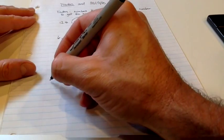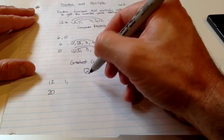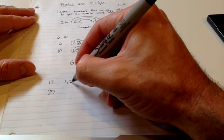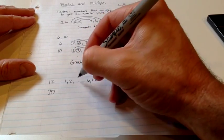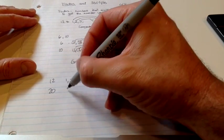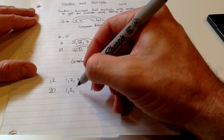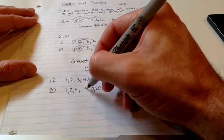So if I'm looking for common factors of numbers like 12 and 20, I start out, what are my factors? 1, 12, 2, 6, 3, and 4. For 20, 1, 20, 2, 10, 4, 5.